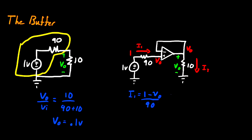But because it's an op amp, we know that I1, the current going into the positive terminal of our op amp, must be equal to 0. So for this to be true, we know VO must be equal to 1.